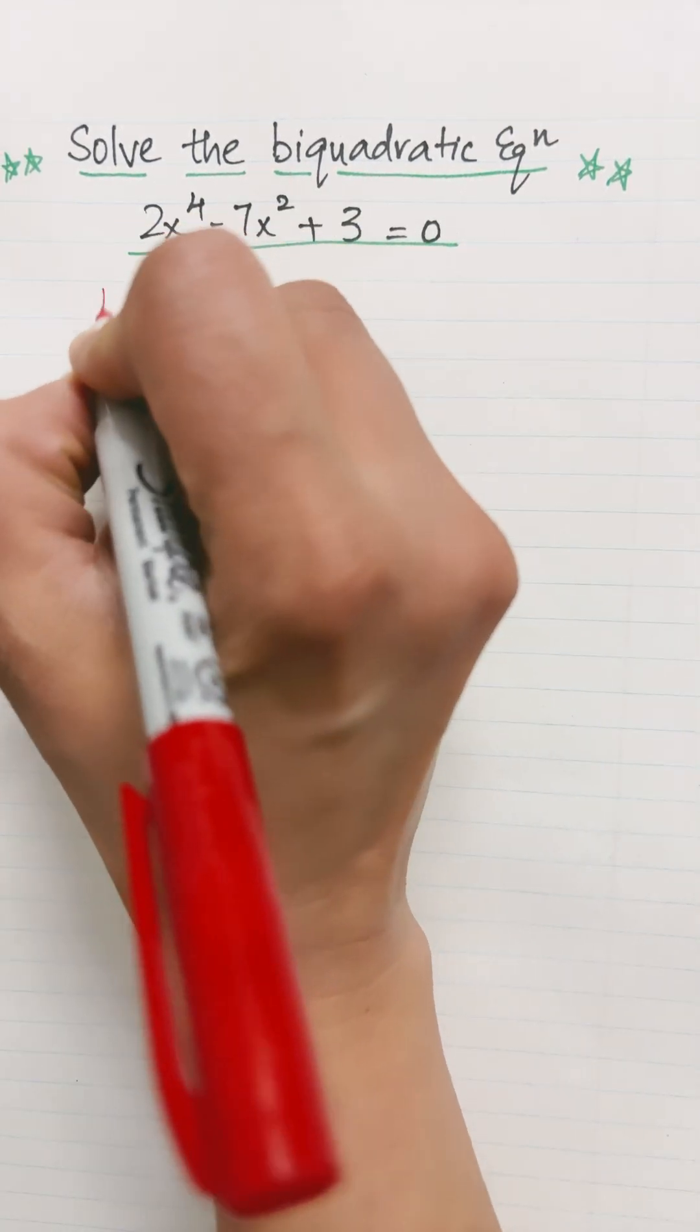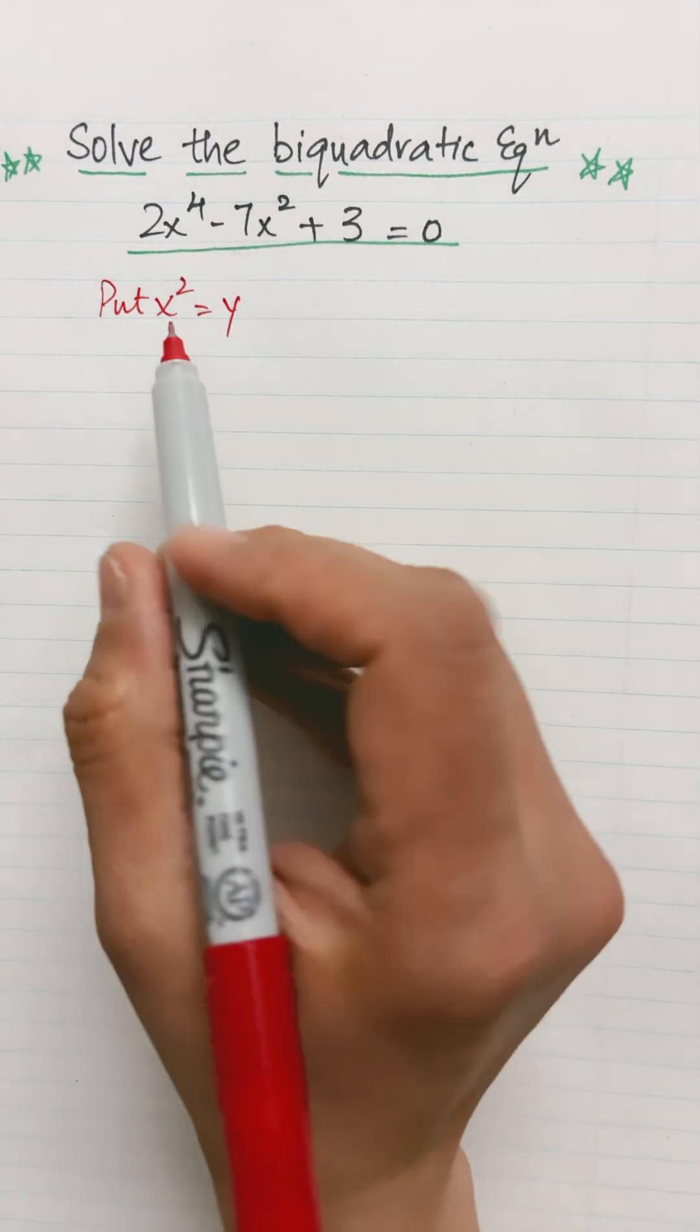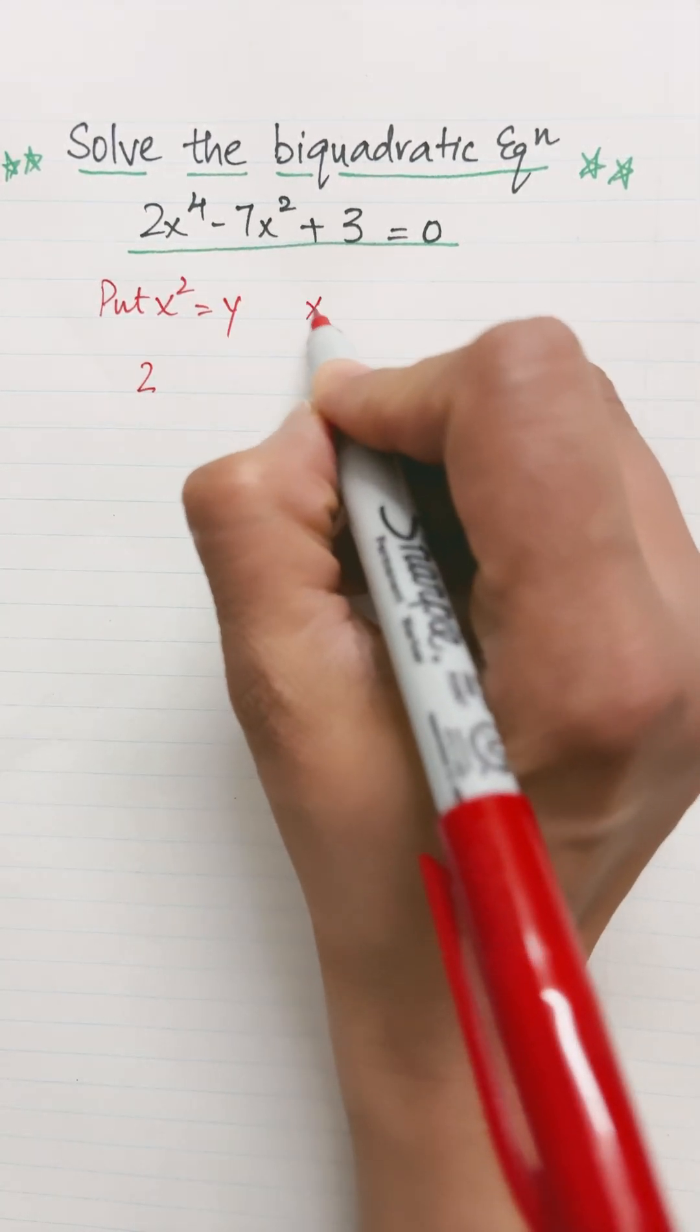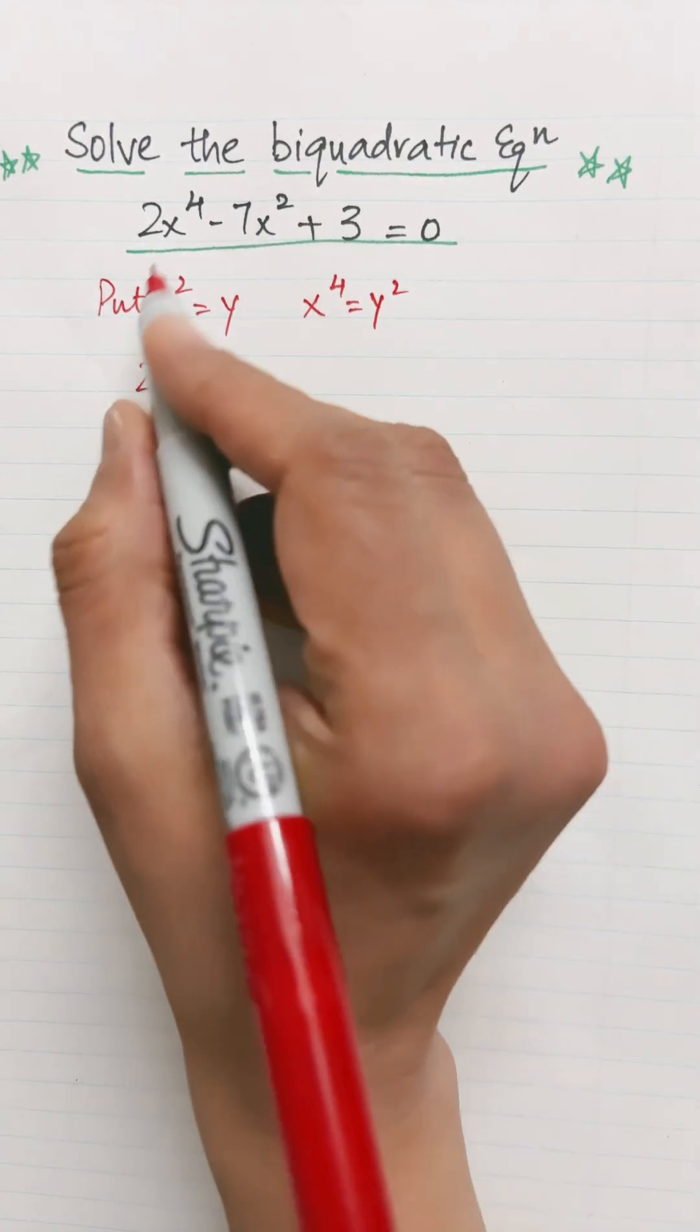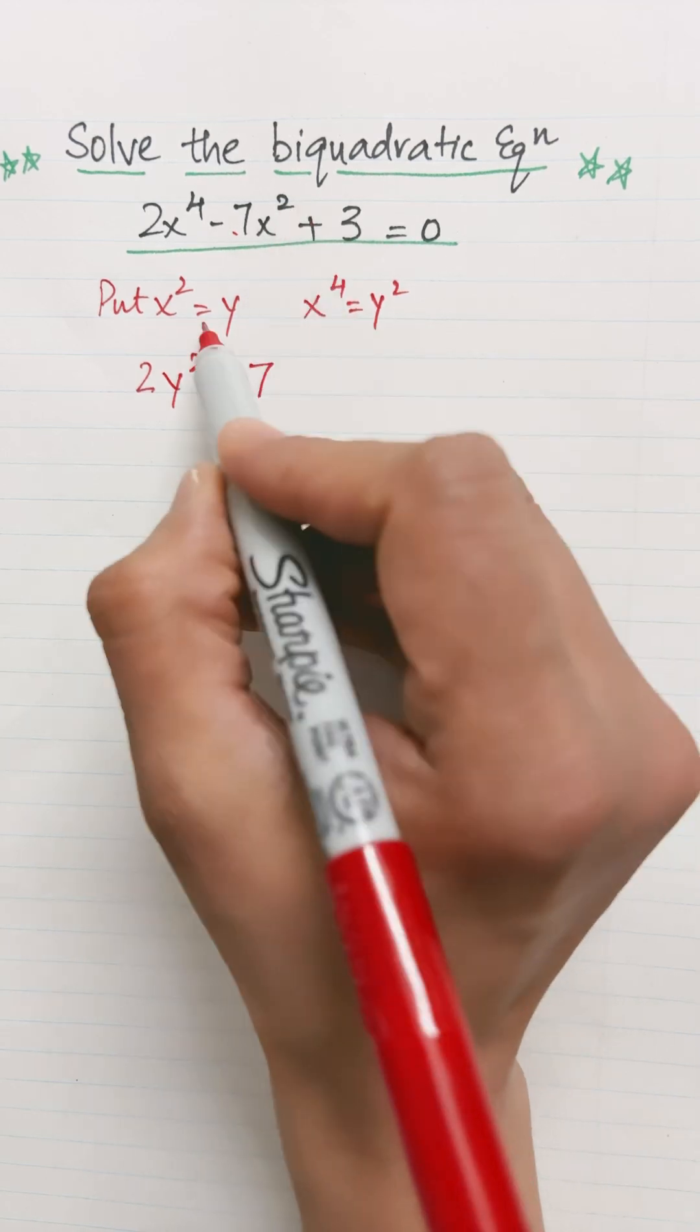Let it be y, so this equation becomes... if x squared is y, then x^4 will be equal to y squared. So this will become 2y squared minus 7y plus 3 equals 0.